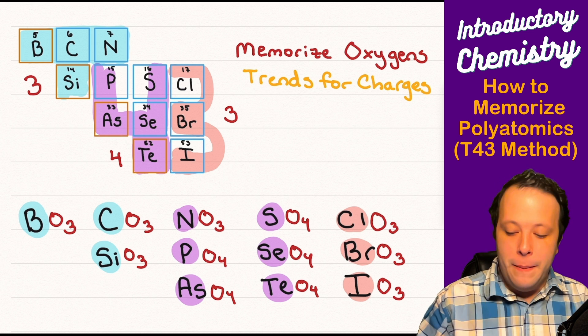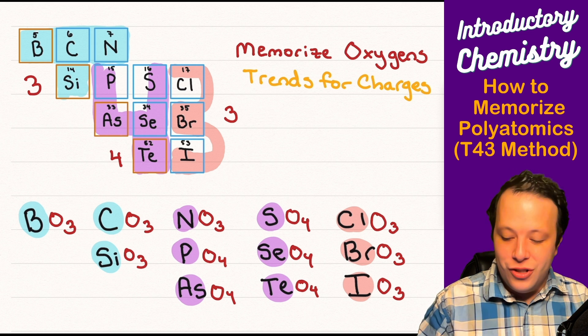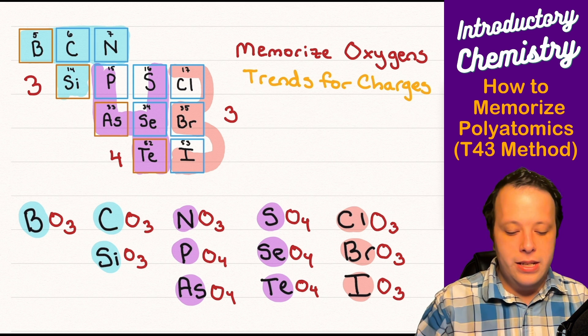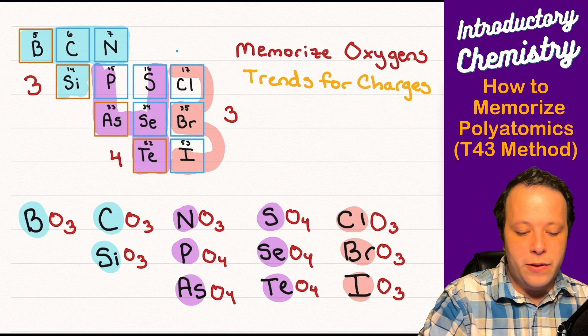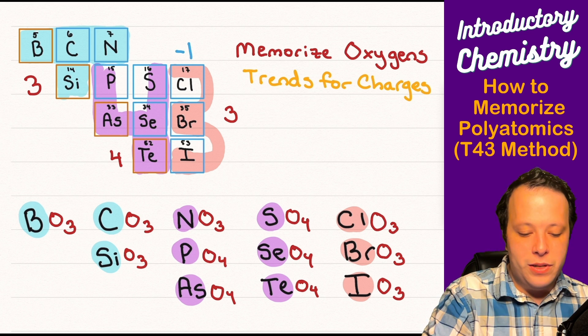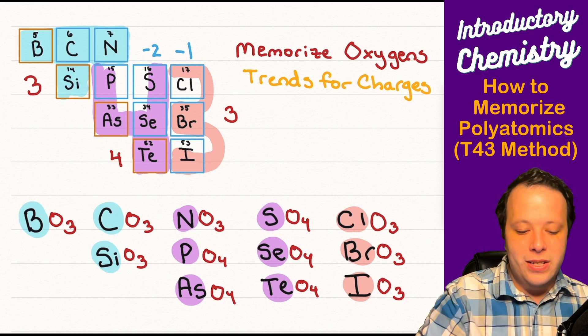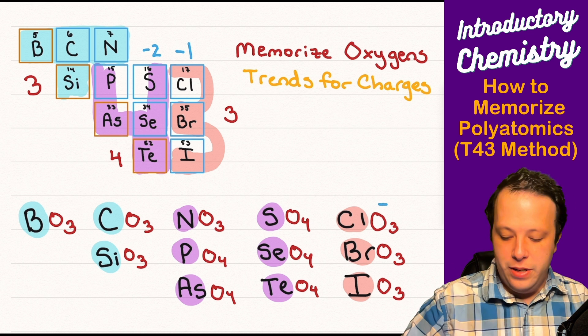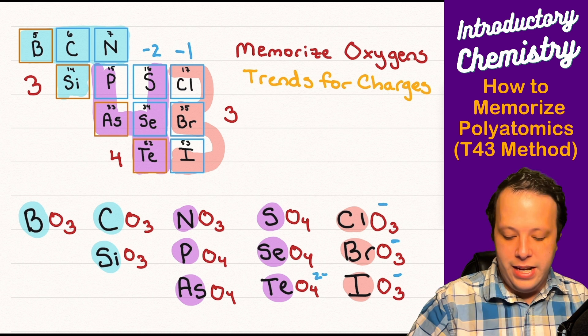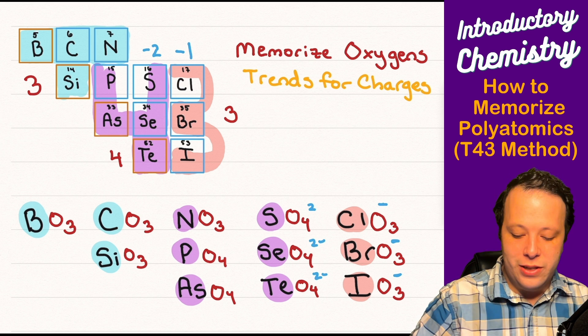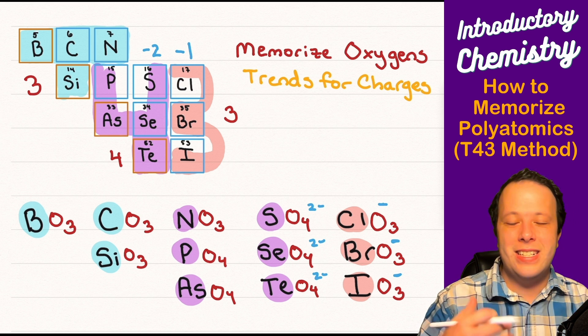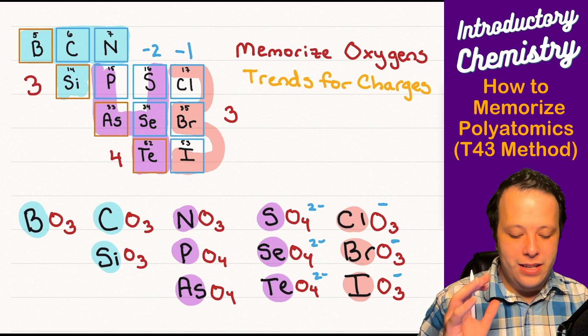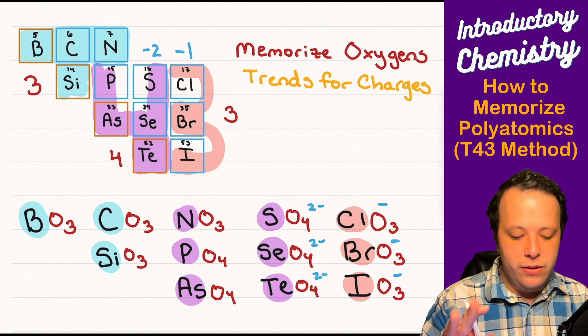Now what about the charges? The good thing here is the charges actually for the most part go with the periodic table trends. So if you remember for the halogens that's negative one for sulfur that's negative two. So we can fill in the same charges for those columns. So we're going to put the negative one next to the chlorates bromates negative two next to the sulfates and selenates and tellurates. Now with nitrate and below this is where it's a little different.